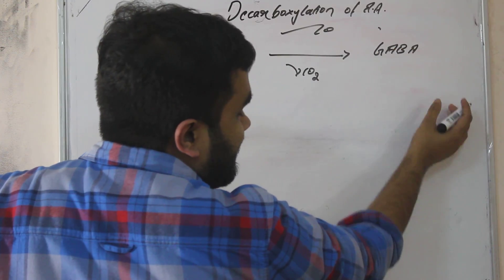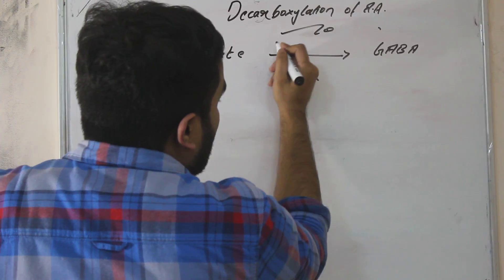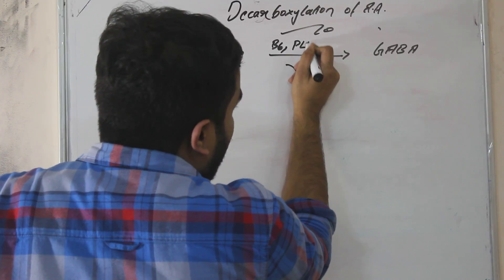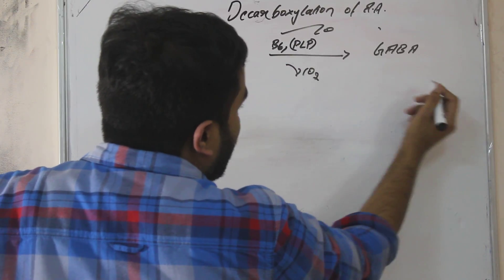GABA is inhibitory type of neurotransmitter. What is the cofactor here? The coenzyme is vitamin B6, PLP. PLP means pyridoxal phosphate.